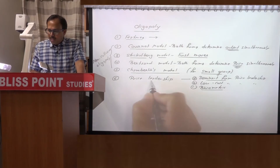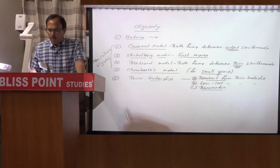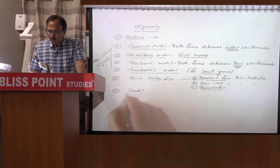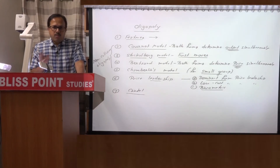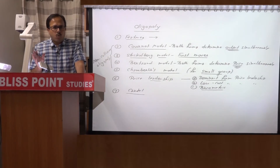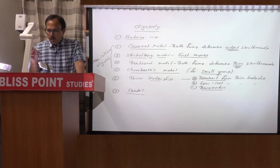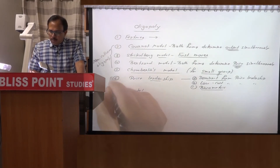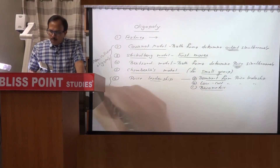Here one firm acts as the leader and others follow. The other form of collusion is cartel. Firms form an organization — formal or informal — and collectively decide the price, the overall quantity to produce, the allocation of profit, and so on. A classic example is OPEC. Price leadership and cartel can be clubbed as part of collusive oligopoly.